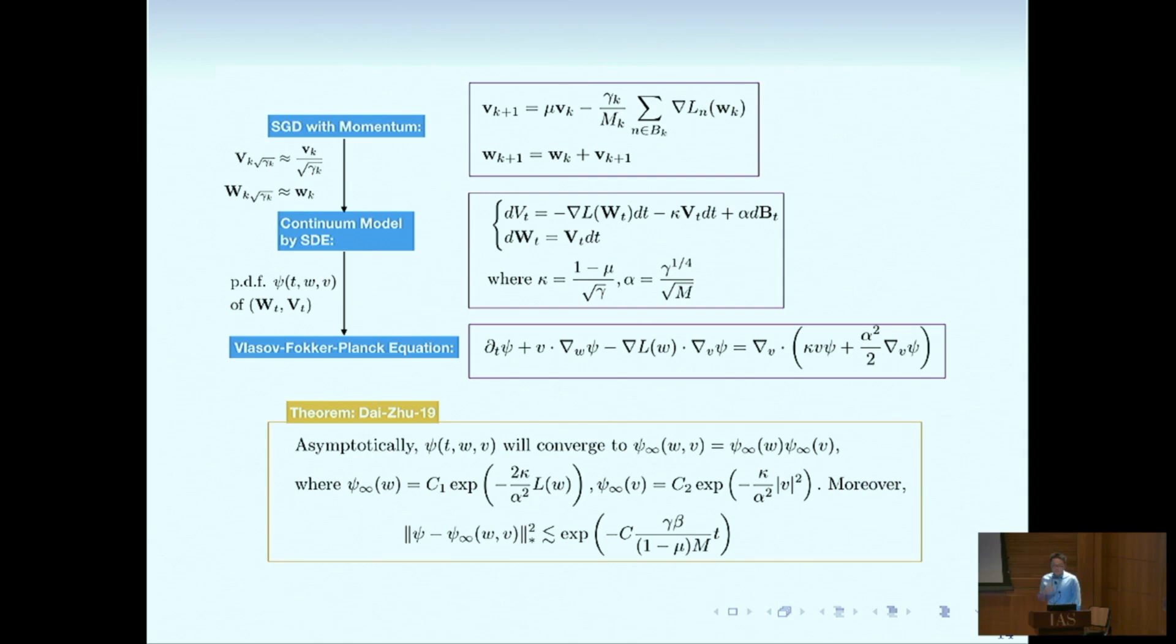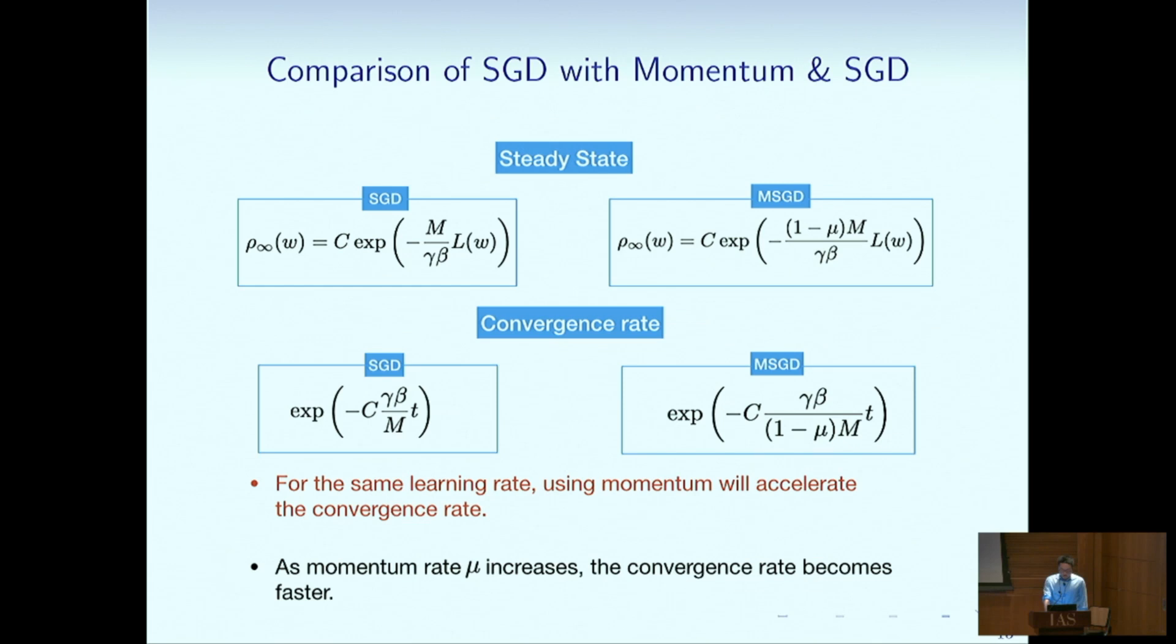This type of analysis based on the SDE can be extended to other variants of SGDs. For example, the SGD with momentum can be analyzed similarly with additional term to account for the friction introduced by the momentum. In particular, it can be seen that the SGD with momentum can accelerate the convergence rate, and the mini batch kind of accelerate the convergence rate compared to GD. So there are two accelerations.